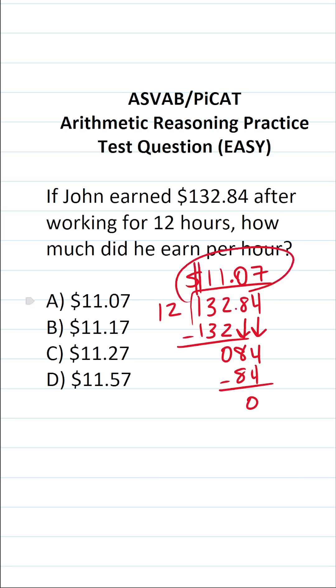So just like that, we have our answer. John earns $11.07 per hour, so this one is going to be A. As I said, for the ASVAB and PiCAT, it's very important to be proficient with fractions as well as decimals.